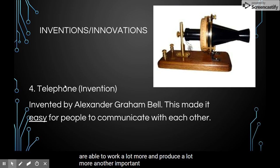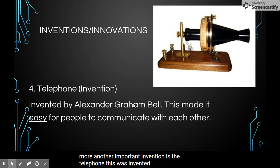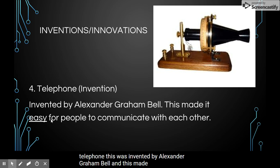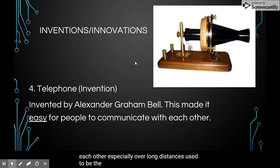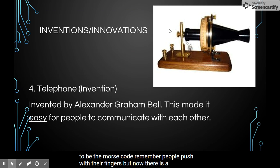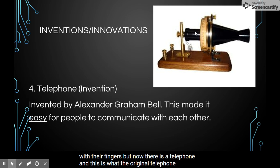Another important invention is the telephone, invented by Alexander Graham Bell. This made it easy for people to communicate with each other, especially over long distances. It used to be Morse code, where people push with their fingers. But now there is a telephone — and this is what the original telephone looked like. It's a lot different now, but that's what it used to look like.